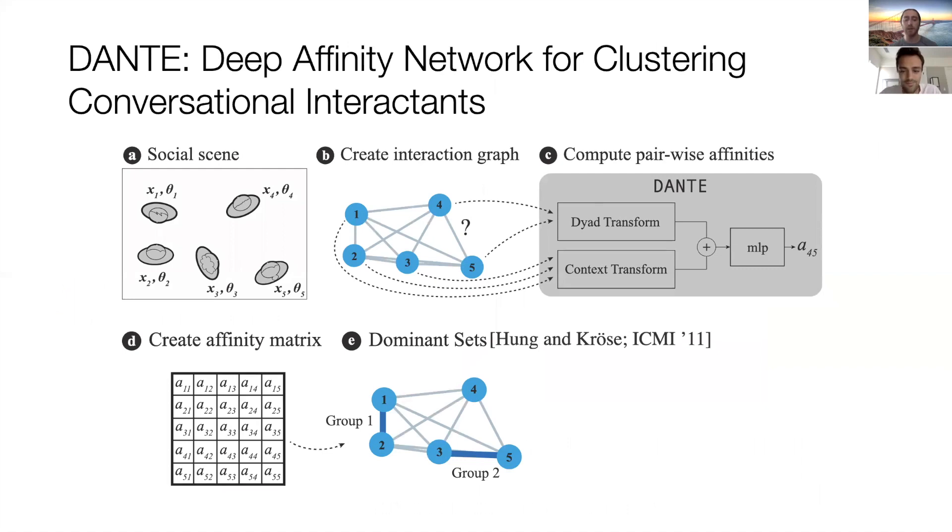Here, you can see how our affinity calculation network, Dante, fits into the overall group detection pipeline. Shown is an example of Dante calculating the affinity between persons 4 and 5, and this would be repeated for all dyads in the graph in order to construct the affinity matrix.